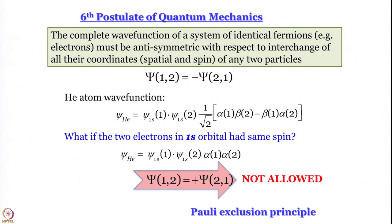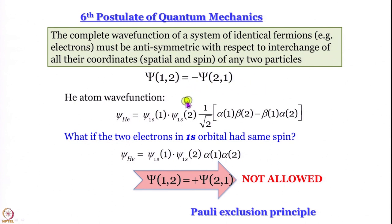The reason we worry about whether functions are symmetric or antisymmetric with respect to exchange is the Pauli principle — the sixth postulate of quantum mechanics — which states that for fermions like electrons, the complete wave function of the system must be antisymmetric with respect to exchange. So ψ(1,2) must equal −ψ(2,1): if you interchange the labels 1 and 2, the wave function must change sign.